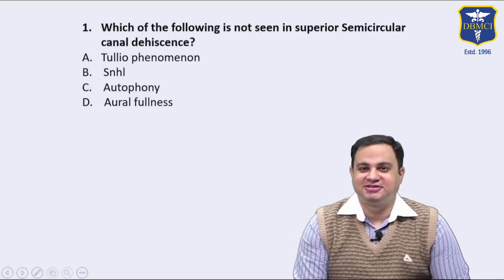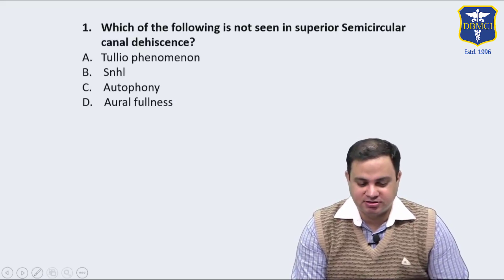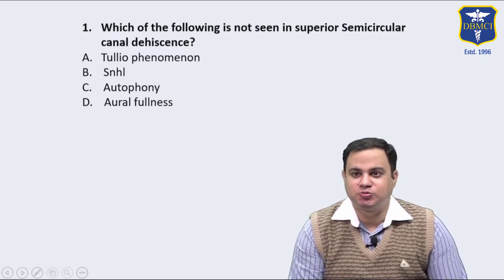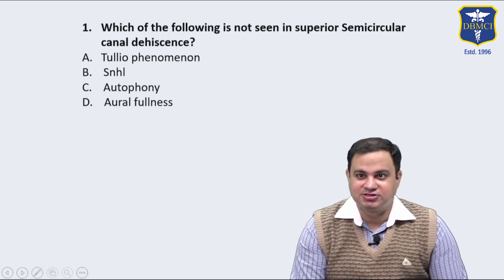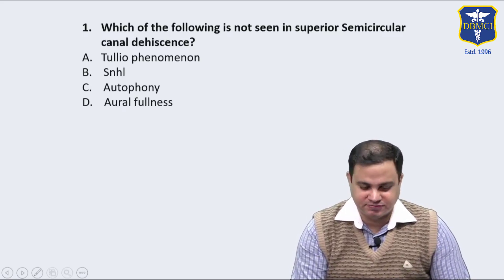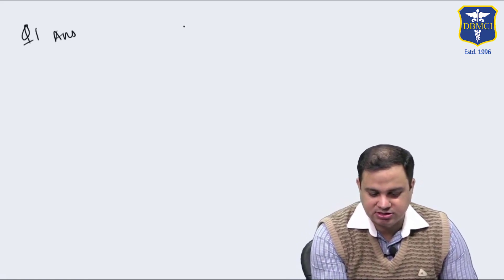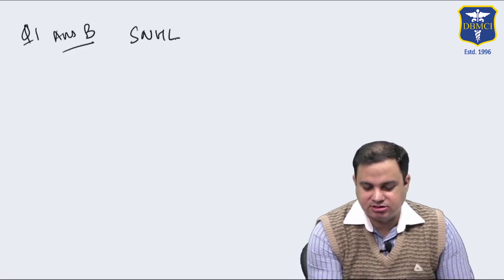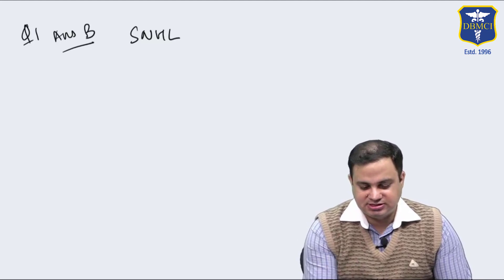Hello friends, I will be discussing the recall questions of AIIMS November 2019. Coming to question number one: which of the following is not seen in superior semicircular canal dehiscence? The answer is B, that is SNHL — sensorineural hearing loss.